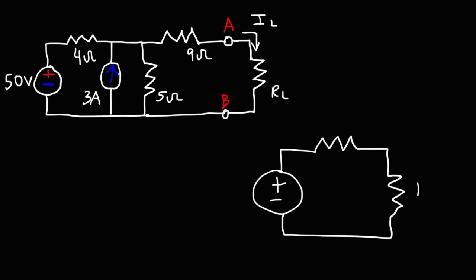Here is the load resistor. This is the Thevenin resistance. And this is the Thevenin voltage. In this simplified form, it will be relatively easy to calculate the current flowing through the load resistor.